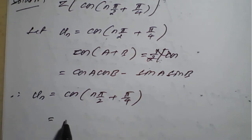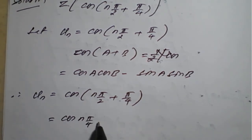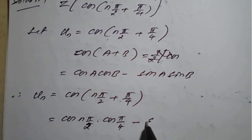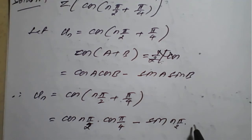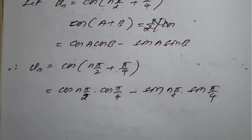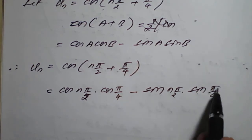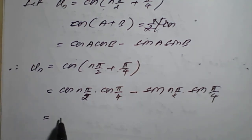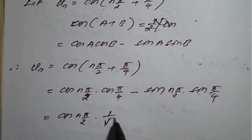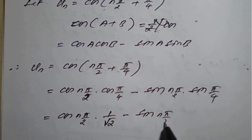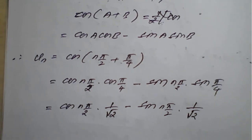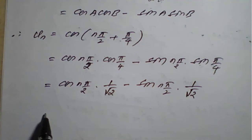Applying the formula, u(n) = cos(nπ/2)·cos(π/4) − sin(nπ/2)·sin(π/4). We know that cos(π/4) = 1/√2 and sin(π/4) = 1/√2, since sin 45° and cos 45° are both 1/√2.